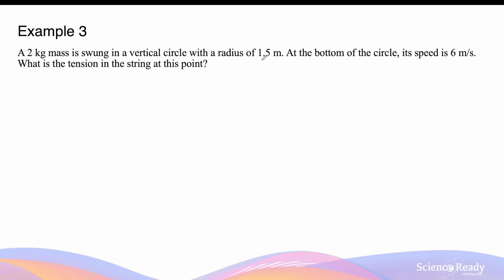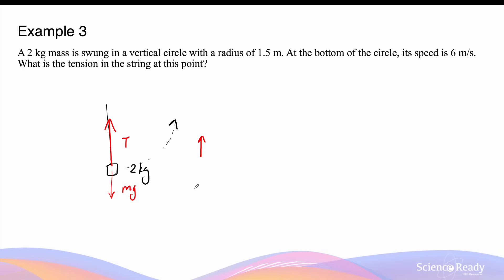A 2-kilogram mass is swung in a vertical circle of radius 1.5 meters. At the bottom of the circle its speed is 6 meters per second — what is the tension in the string at this point? The free body diagram shows the weight force going down and the tension going upward, which must be greater than the weight force so that the net upward force provides the centripetal force. The net force equals the centripetal force mv² over r, which equals tension minus weight.